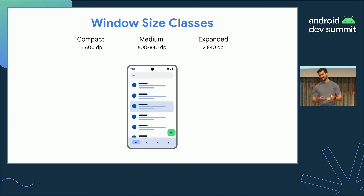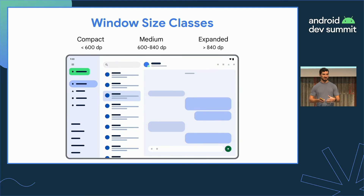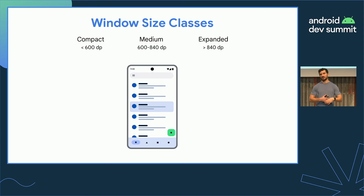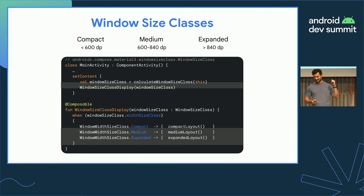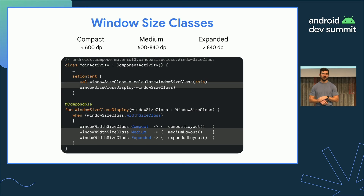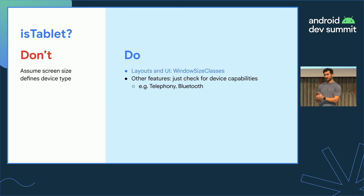Instead, for UI and layout related adaptivity, use Window Size Classes — our recommended breakpoints that represent typical device usage patterns and are device-agnostic. They work correctly in multi-window and freeform windows without extra thinking. We now have a utility library called the Window Size Class Library, released with Compose Material 3 stable, that makes this a single function call with observable layout breakpoint states. For non-UI cases like telephony checks, actually look for whether the specific capability your app depends on is satisfied, rather than restricting by device type.